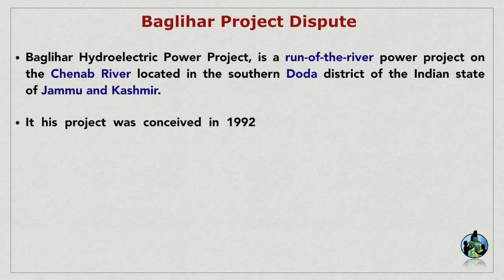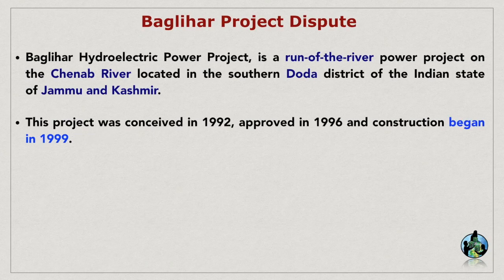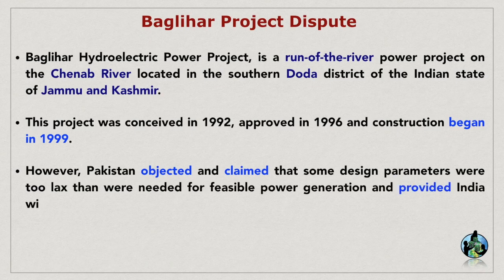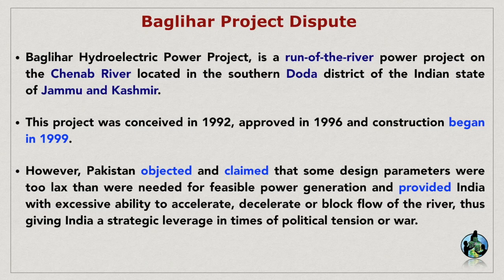This project was conceived in 1992, approved in 1996, and construction began in 1999. However, Pakistan objected and claimed that some design parameters were too lax than were needed for feasible power generation, and provided India with excessive ability to accelerate, de-accelerate, or block flow of the river, thus giving India a strategic leverage in times of political tension or war.